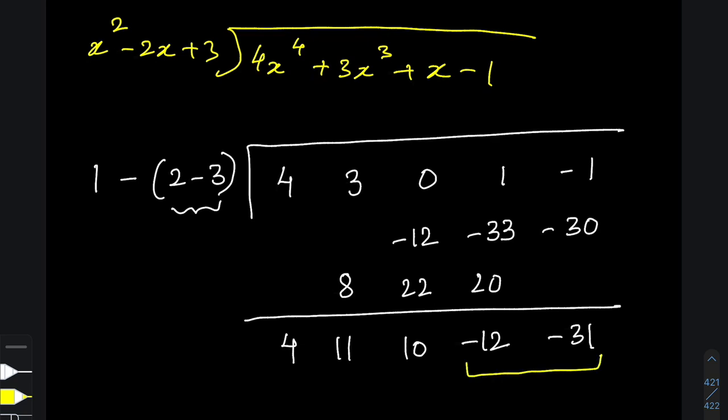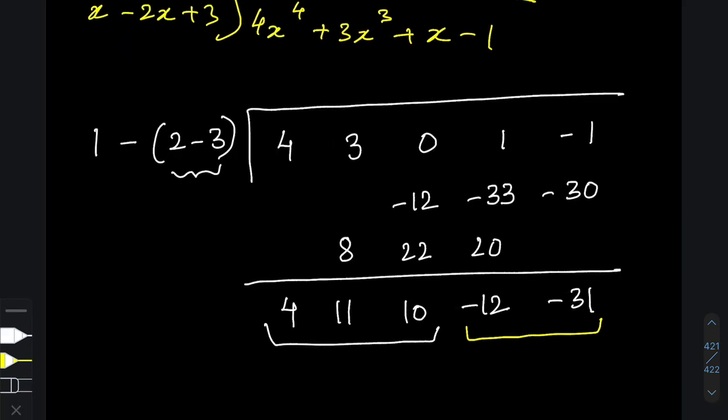So the last two numbers correspond to the remainder, and the first three numbers correspond to the quotient. So your remainder is going to be minus 12x minus 31, and your quotient is going to be 4x squared plus 11x plus 10.